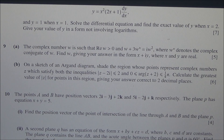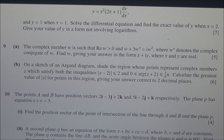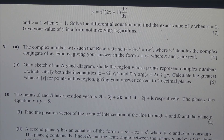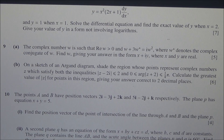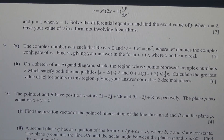Part b. On a sketch of an Argand diagram, shade the region whose points represent complex numbers which satisfy both the inequalities: mod of z minus 2i less than or equal to 2, and 0 less than or equal to the argument of z plus 2, and less than or equal to pi over 4. Calculate the greatest value of mod z for points in this region, giving your answer correct to two decimal places. 11 marks in all for this question.